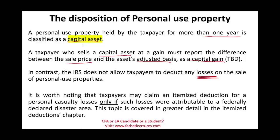It's worth noting that a taxpayer may claim an itemized deduction for personal casualty losses only if those losses are attributable to a federally declared disaster area — for example, Hurricane Ian. Any such losses would be deducted as an itemized deduction. This law is in effect through 2025; this recording was made in 2022.